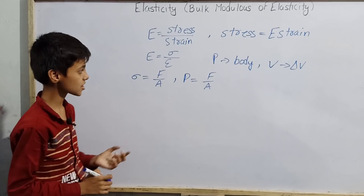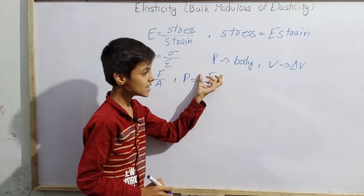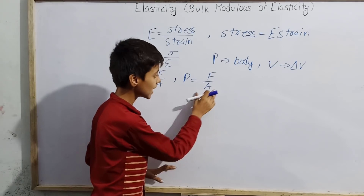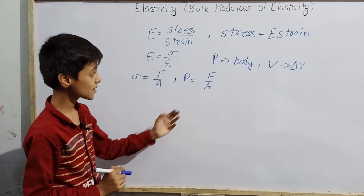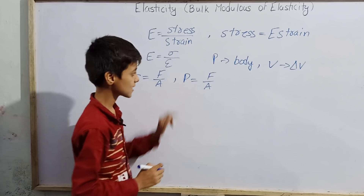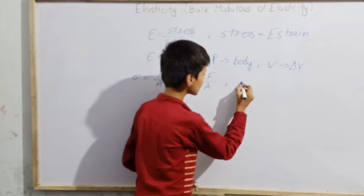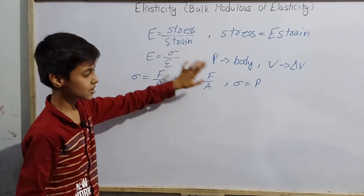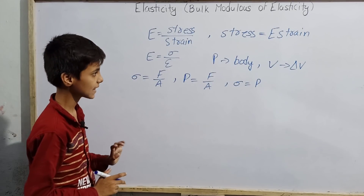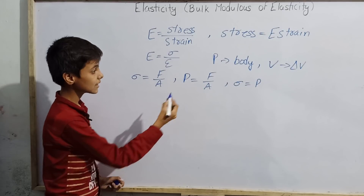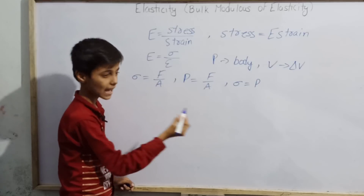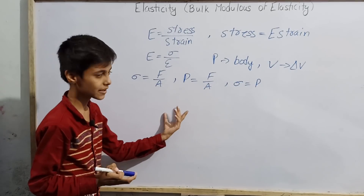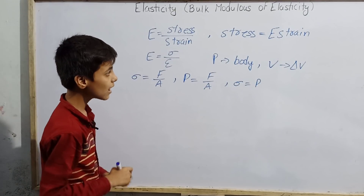Pressure is also F divided by A. The only difference is that sigma equals restoring force by cross-sectional area, and pressure equals external force acting on an area divided by cross-sectional area. In such cases, let us take that sigma equals P, meaning our stress equals pressure, with magnitude P.